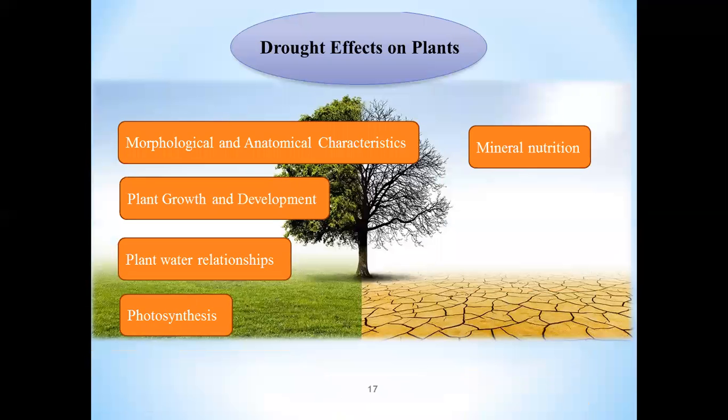Another effect of drought on plants is mineral nutrition. Changing nutrient uptake by the roots and their transport to the shoots is an important effect of water deficit on plants. Membrane stability in the roots plays an essential role in the appropriate mineral nutrition of plants. Therefore, preservation of membrane stability is a very important factor in plant resistance to drought stress.